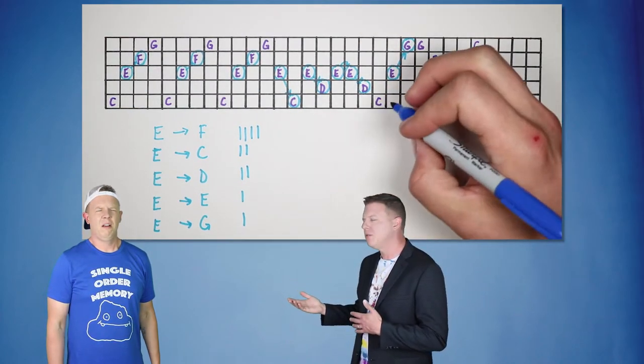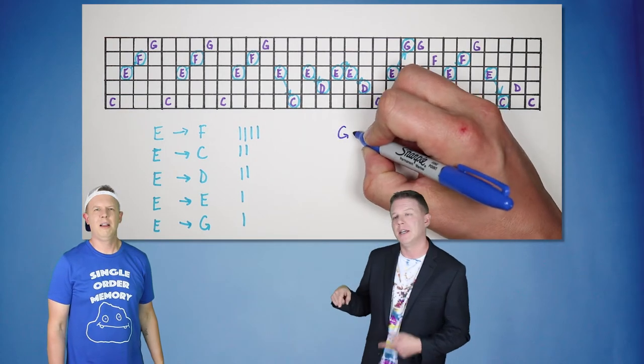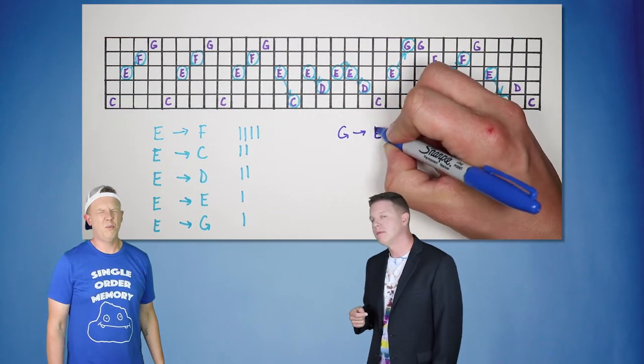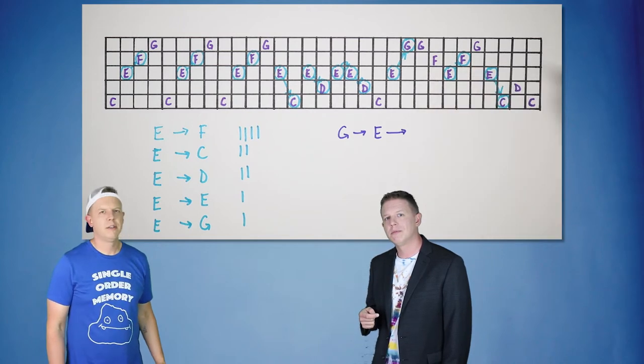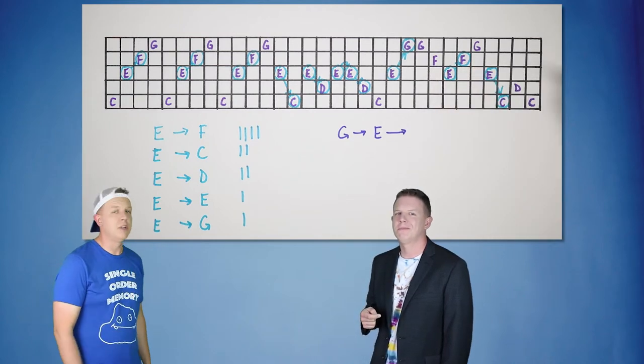But what if you knew more than one note in the sequence? Let's say you didn't hear just an E, but you heard a G right before the E. Can you refine your prediction? Wait, what do you mean before E? There's nothing before E. F comes after E.